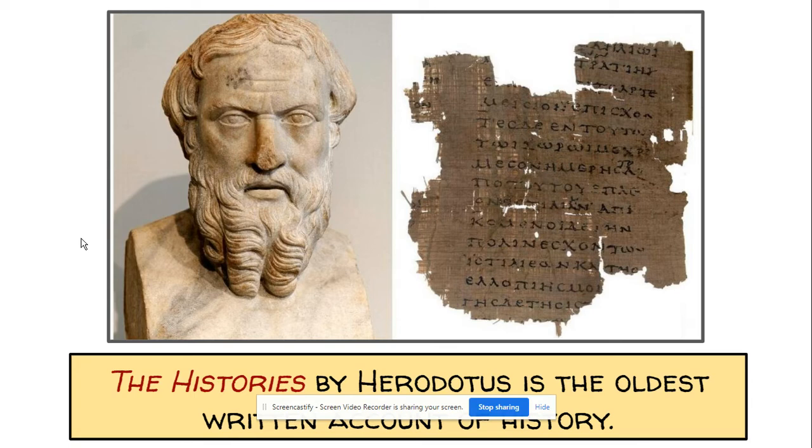Now Herodotus is a flawed source. He's nicknamed the father of history, but he also has another nickname, which is the father of lies. His source seems to be heavily fantasized and skewed and filled with exaggerations. So although we technically classify this as the beginnings of history, we also know that he's a very flawed source and that his stories are often embellished.